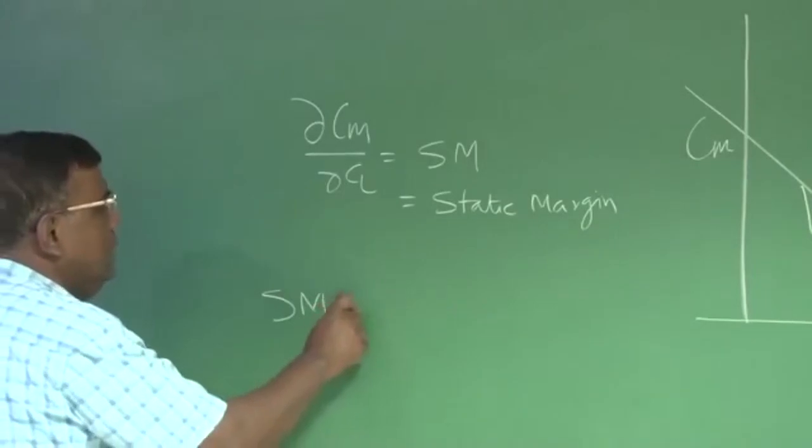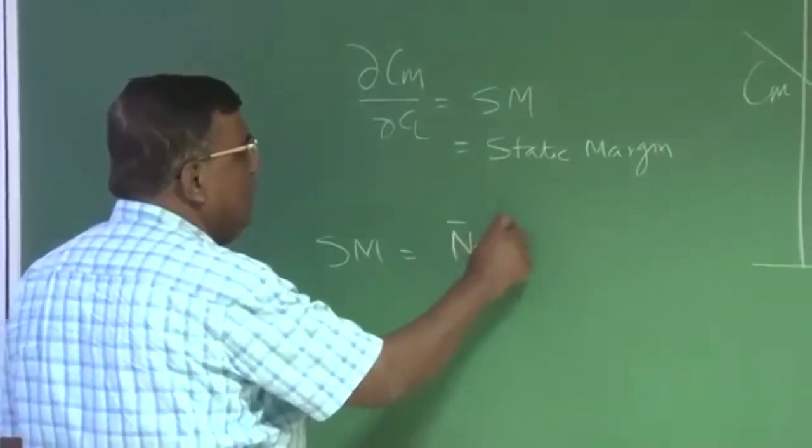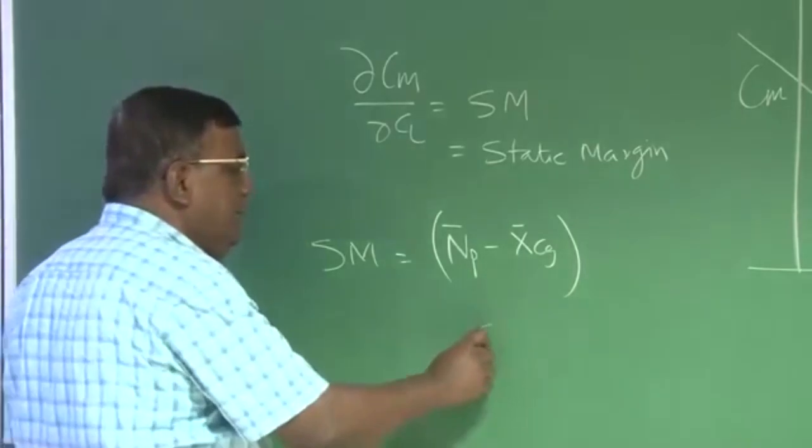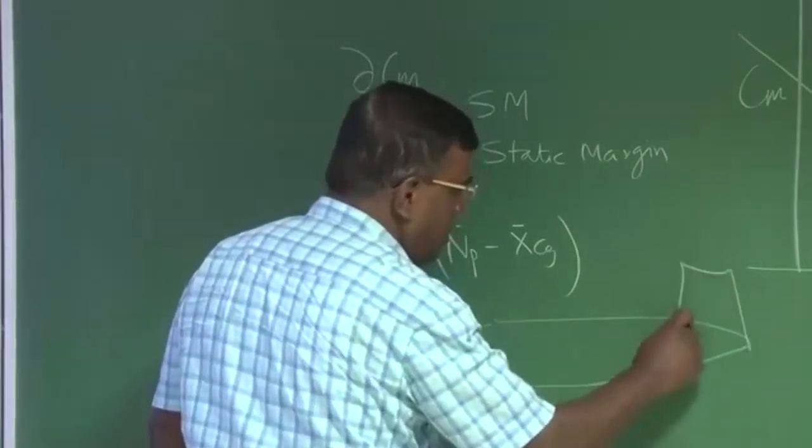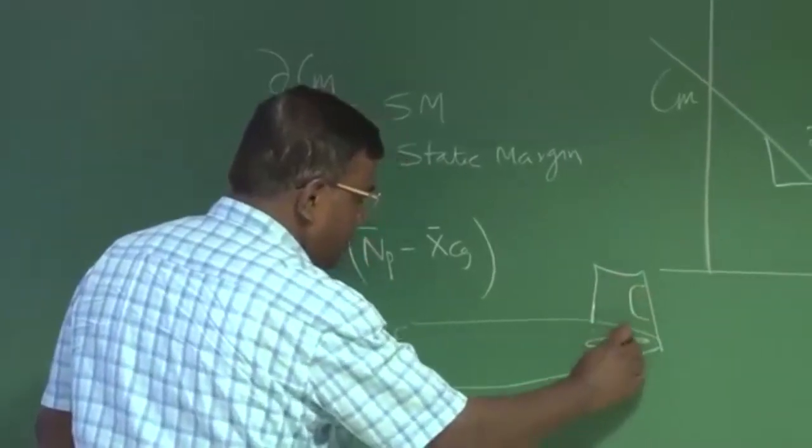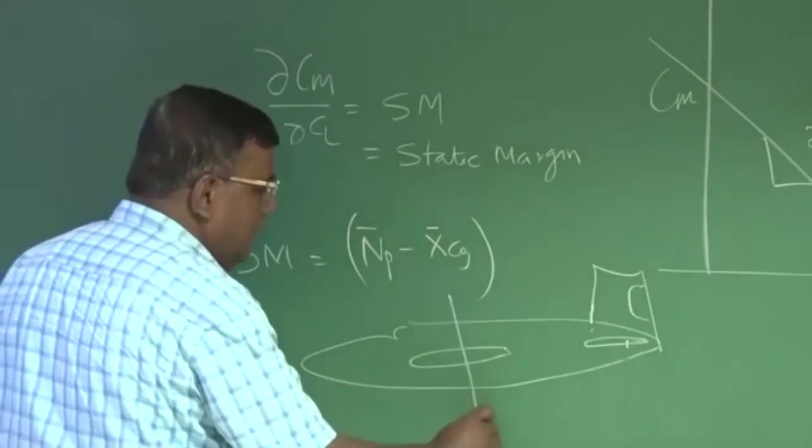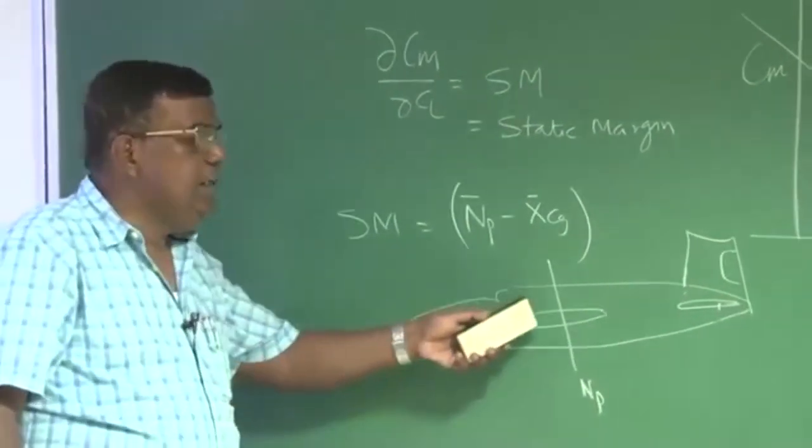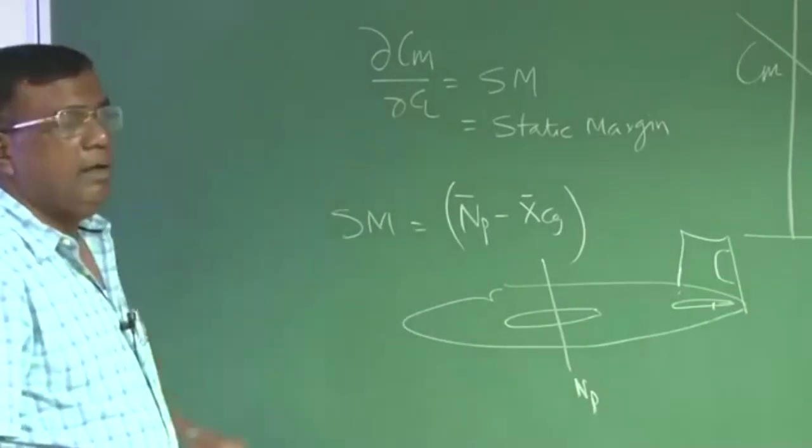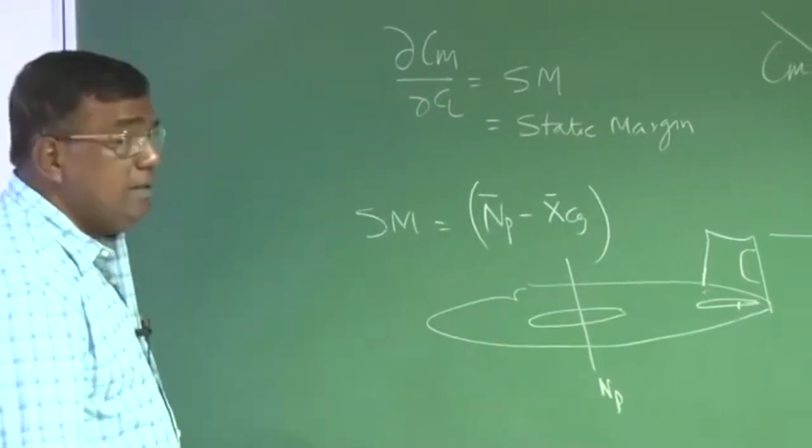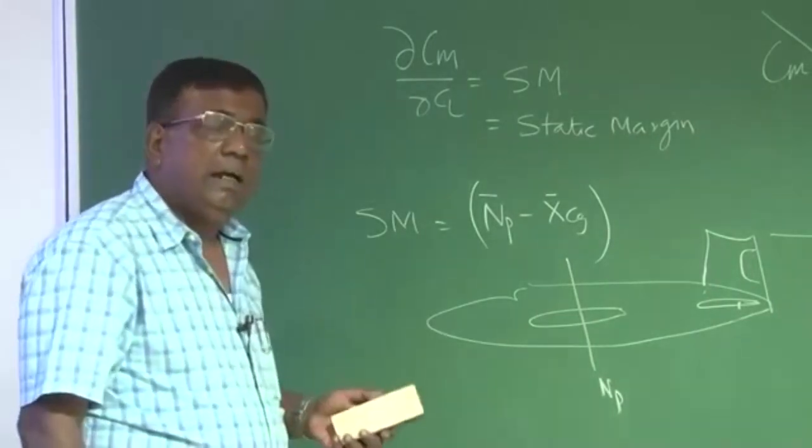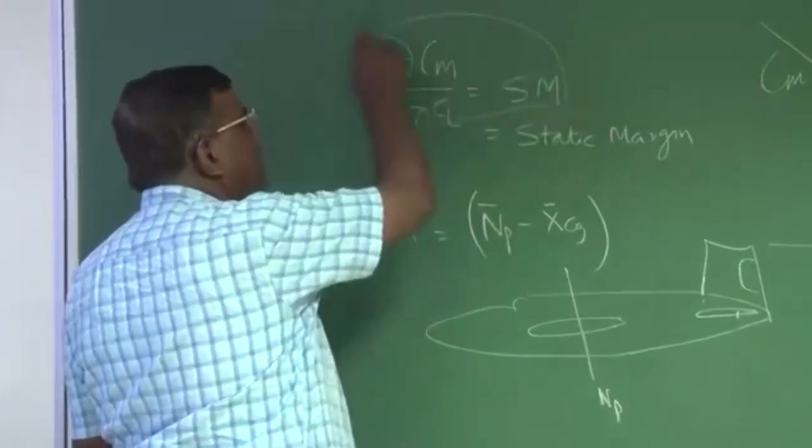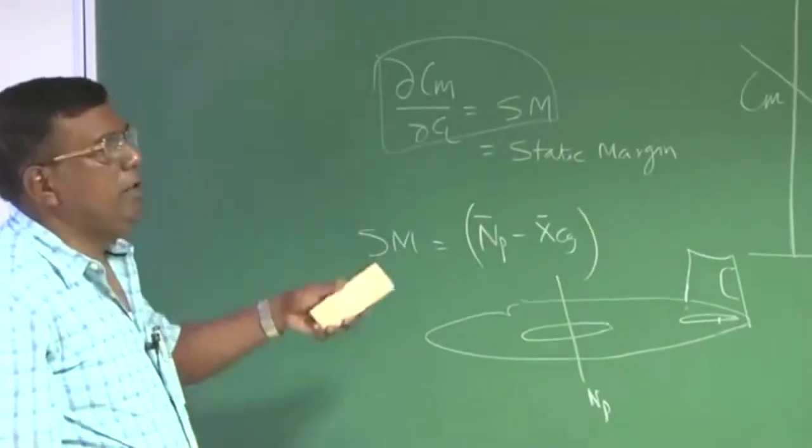Now, you also recall that approximately we could write dCm/dCL equal to static margin. And what was static margin? Static margin was defined as a distance between neutral point and Cg non-dimensional. So, if I have an airplane and somewhere here is neutral point, and the definition of neutral point was neutral point is that Cg location at which dCm/dCL becomes 0. Or more classically neutral point is that Cg location at which the aircraft becomes neutrally stable. This is an approximate expression, but very very useful expression.